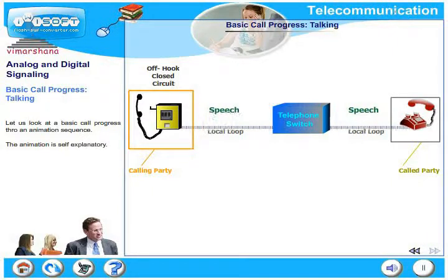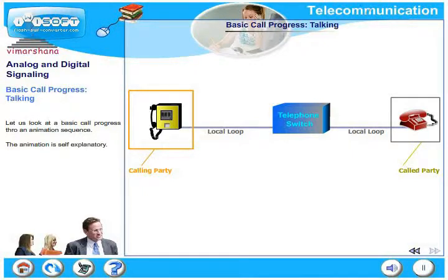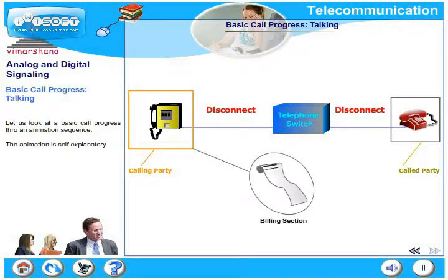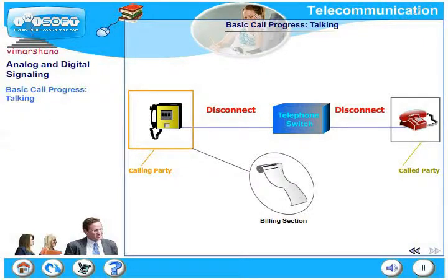Both parties are now ready and they start speaking to each other. After the conversation is over, either party can disconnect by going on hook. This is sensed by the appropriate exchange — the local or the distant exchange — and the call is disconnected. The billing for the entire duration of the call is computed and logged. This is a typical call flow in a telephone conversation.